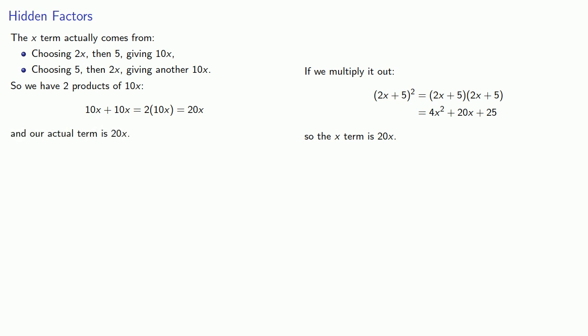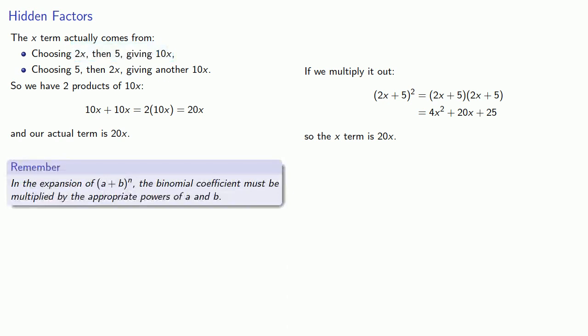And so our actual term should be 20x. And here's the thing to notice, that 2 that we got from the binomial coefficient is here as part of our product, but the rest of it comes from the factors themselves. And so remember, in the expansion of a plus b to power n, the binomial coefficient must be multiplied by the appropriate powers of a and b.